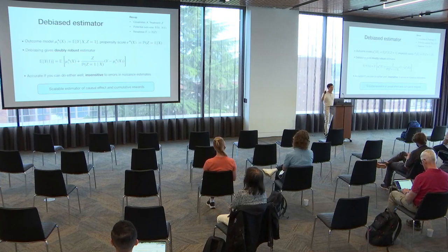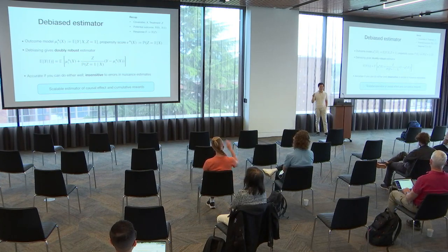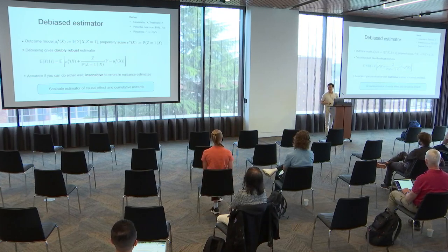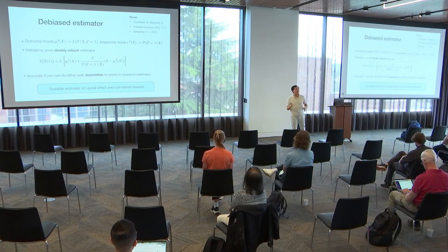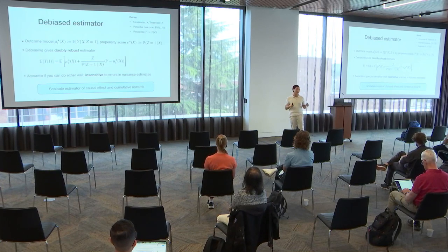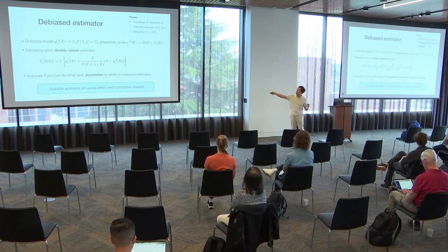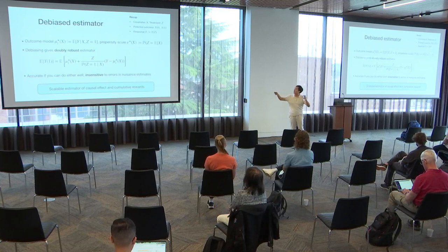That's my five-minute review of causal inference. You can show more refined guarantees — essentially, the error of this estimator has a product form, where it's the error of the outcome model times the error of the propensity model.